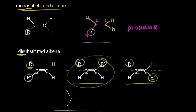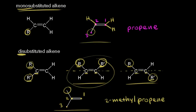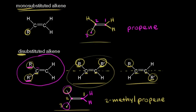Let's look at one of these disubstituted alkenes and name it. Find the longest carbon chain that includes the double bond and give the lowest number to the double bond — starting at carbon one, carbon two, carbon three. A three-carbon alkene is propene, with a methyl group coming off carbon two, so this is 2-methylpropene. Both R groups happen to be methyl groups bonded to the same carbon, illustrating this type of disubstituted alkene.